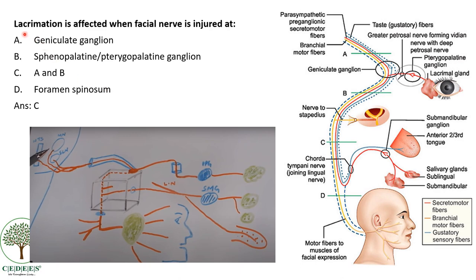Next question: lacrimation is affected when facial nerve injury occurs at which level? The level of the geniculate ganglion, the pterygopalatine ganglion, both A and B, or foramen spinosum? The answer is both ganglia. Before we go further, we need to understand that the facial nerve is a mixed nerve. It carries taste sensation to the anterior two-thirds of the tongue, preganglionic secretomotor fibers to the lacrimal gland, the submandibular and sublingual glands, and motor fibers to the muscles of facial expression.